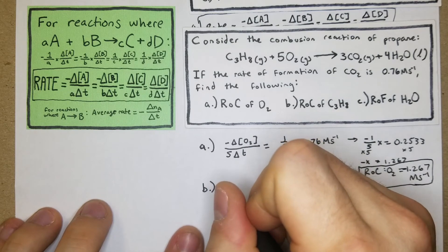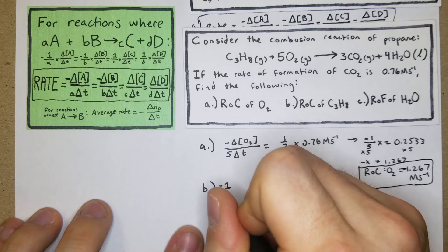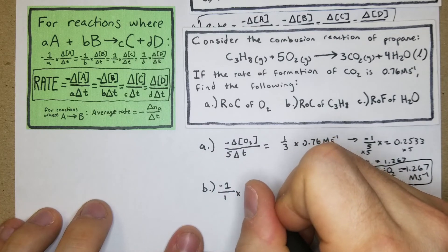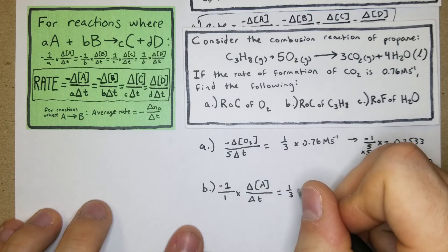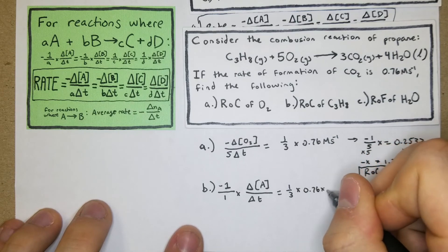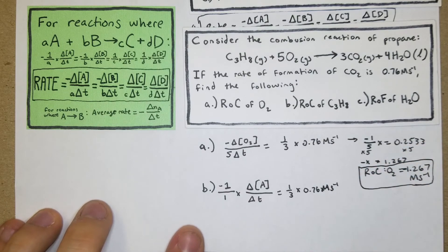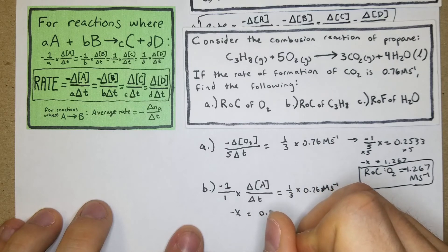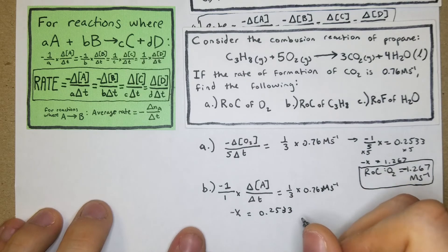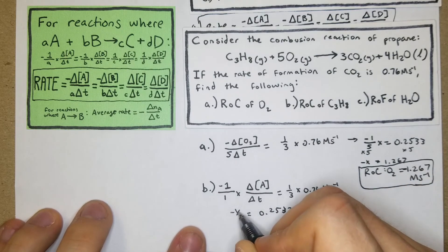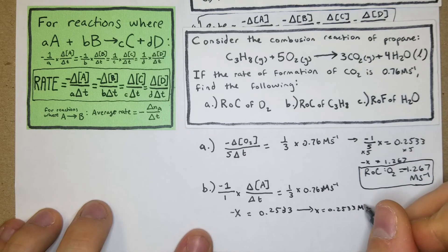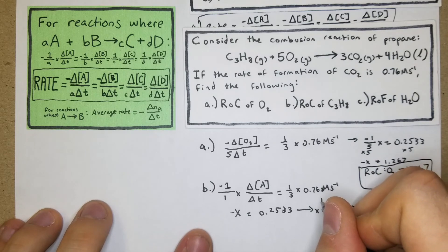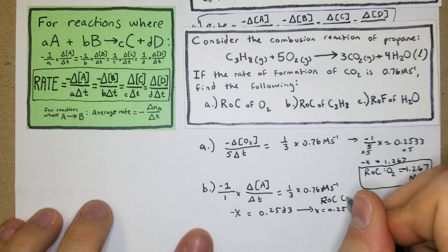For part b, the rate of consumption of C₃H₈: negative one times Δ[C₃H₈] over Δt equals one-third times 0.76 M·s⁻¹. So negative x equals 0.2533, meaning the rate of consumption of C₃H₈ equals 0.2533 M·s⁻¹.